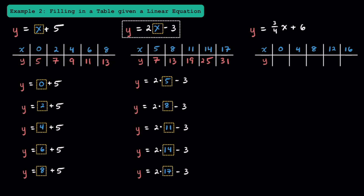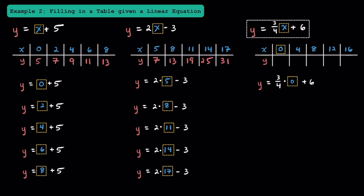Now let's take a look at this equation where we have y is equal to three-fourths times x plus 6. We're going to substitute each of these x values into the equation to solve for y. Substituting in 0, we get y is equal to three-fourths times 0 plus 6. Three-fourths times 0 is just 0, and 0 plus 6 equals 6. When x is equal to 4, we get y is equal to three-fourths times 4 plus 6. The 4s cross-cancel, leaving us with 3, and 3 plus 6 equals 9.